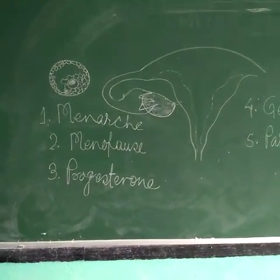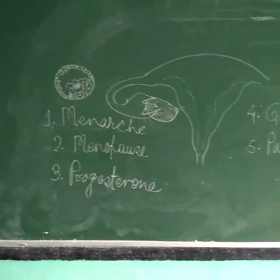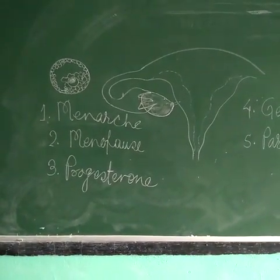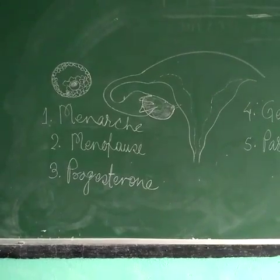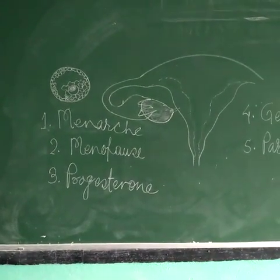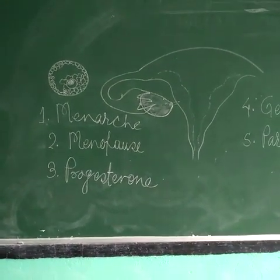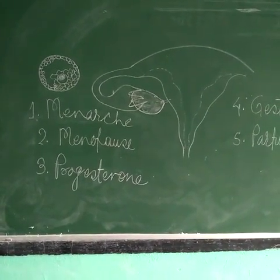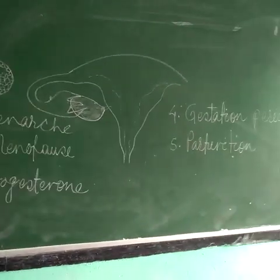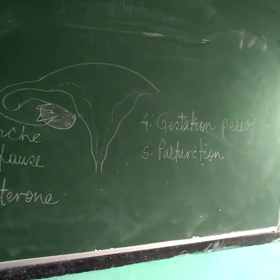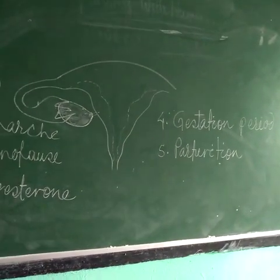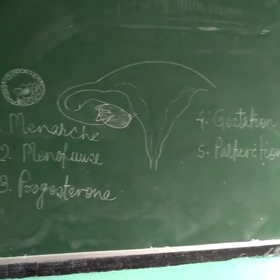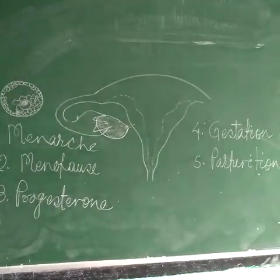Welcome students. Today in this video I am going to discuss some scientific terms relating to human reproduction. The first is menarche, the second is menopause, the third is progesterone, the fourth is gestation period, and the fifth is parturition.